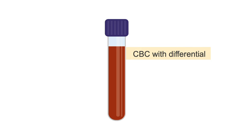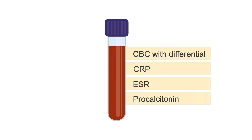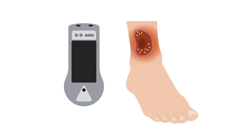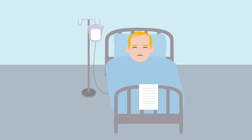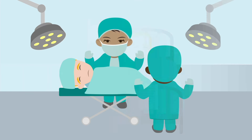Blood work to identify the presence of systemic infection should also be taken. You should order a complete blood count with differential, as well as inflammatory markers such as C-reactive protein, erythrocyte sedimentation rate, and procalcitonin. New technology is also available that shows the infected areas of the wound when a photo is taken with the device; it uses specialized light imaging technology to identify the presence of microorganisms. Patients with severe infections may need to be hospitalized for intravenous antibiotics and the surgical removal of infected tissue from the wound bed.